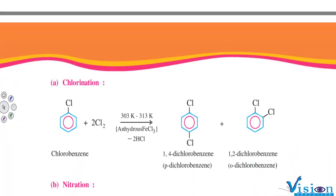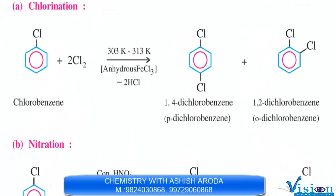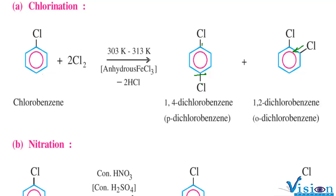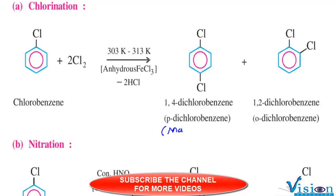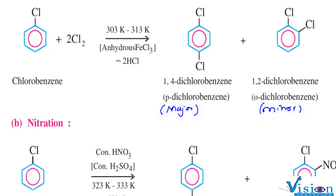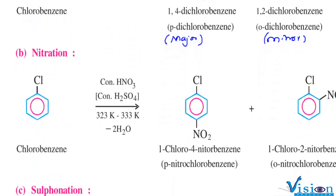Let us see a few examples, which are easy to understand because of our hard work in 11th standard. Chlorobenzene reacting with chlorine in the presence of anhydrous FeCl₃ at about 300 K gives ortho-dichlorobenzene and para-dichlorobenzene (1,2-dichlorobenzene and 1,4-dichlorobenzene). The para product is the major product.